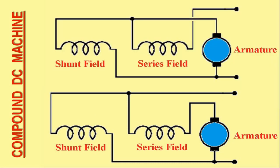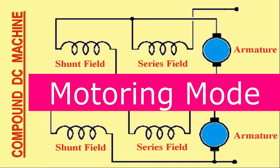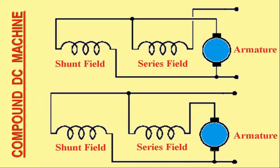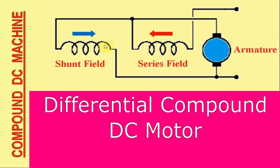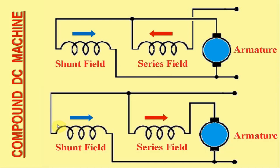Now, consider that these compound DC machines are operating in motoring mode. In the short shunt compound DC motor, with typical field winding connections as depicted in the first figure, it can easily be observed that the direction of the current in the series field winding is opposite to that in the shunt field winding. Consequently, the series field weakens the shunt field, and therefore such a motor is said to be a differential compound DC motor.